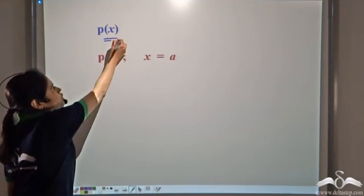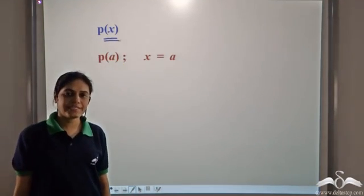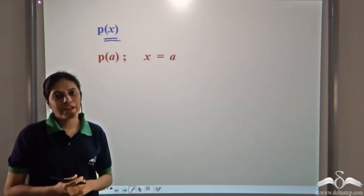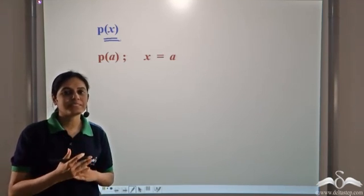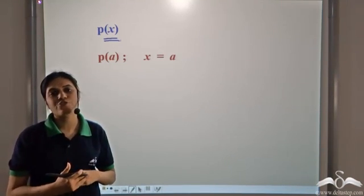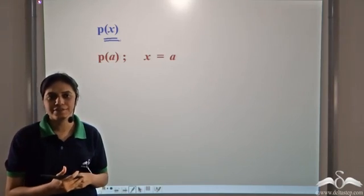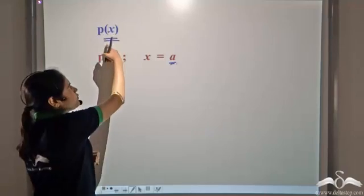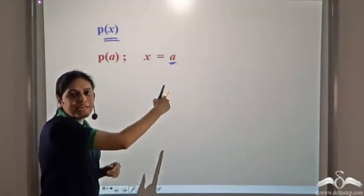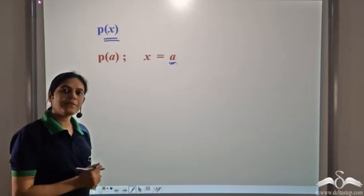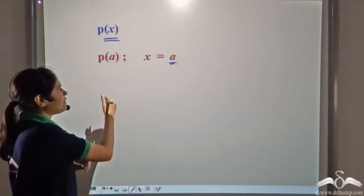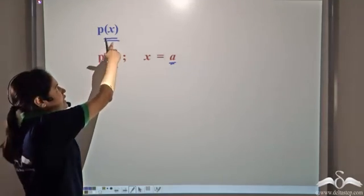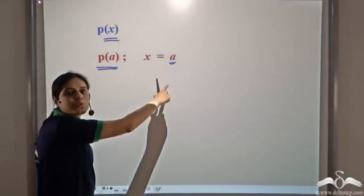P(x) denotes a polynomial in one variable x. We have already learned how to evaluate an expression — we substitute the value of a constant in place of the variable and then simplify it. So if 'a' is a constant and we need to evaluate P(x) at x equal to a, we substitute a in place of x and denote the result as P(a). P(a) denotes P(x) evaluated at x equal to a.